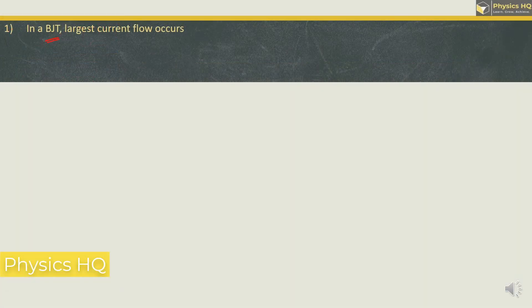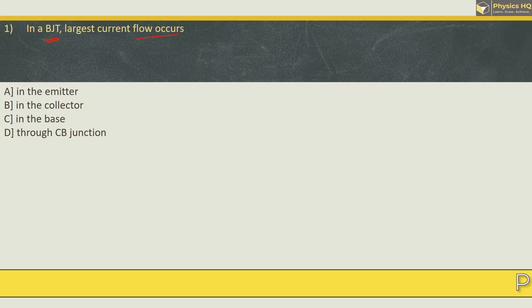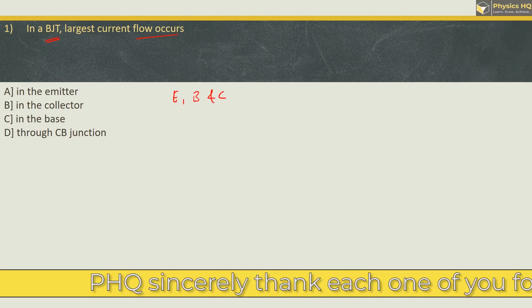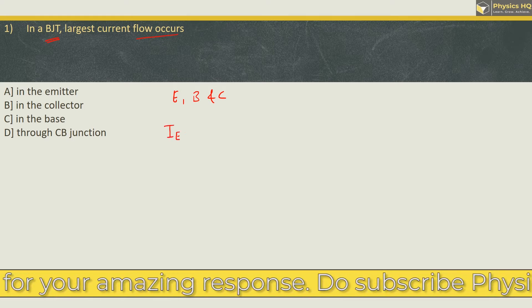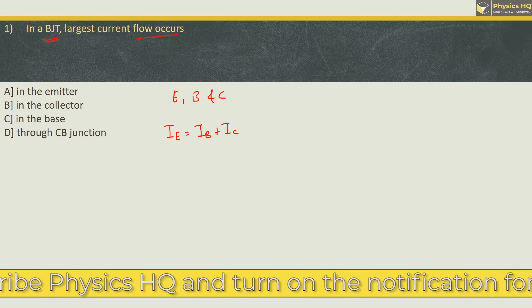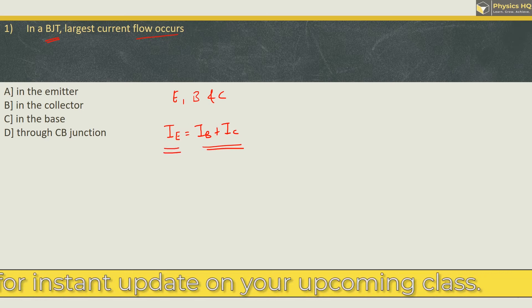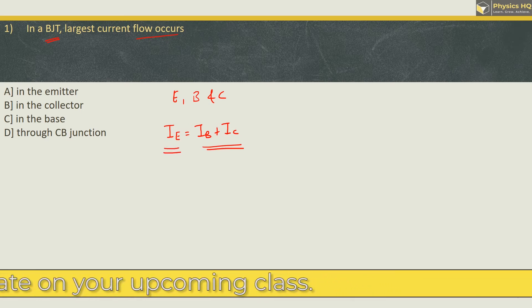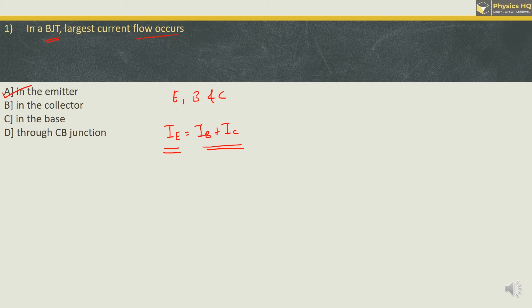In a BJT, largest current flow occurs in the emitter or in the collector, in the base or through the collector base junction. Now we know that BJT has three terminals: emitter, base and collector. The relation between the current at these three terminals is given by IE equals IB plus IC. That is emitter current equals base current plus collector current. So from this what we can say is the emitter current is greater than the other two currents. Therefore the largest current flow occurs in the emitter. So the correct option is option A.